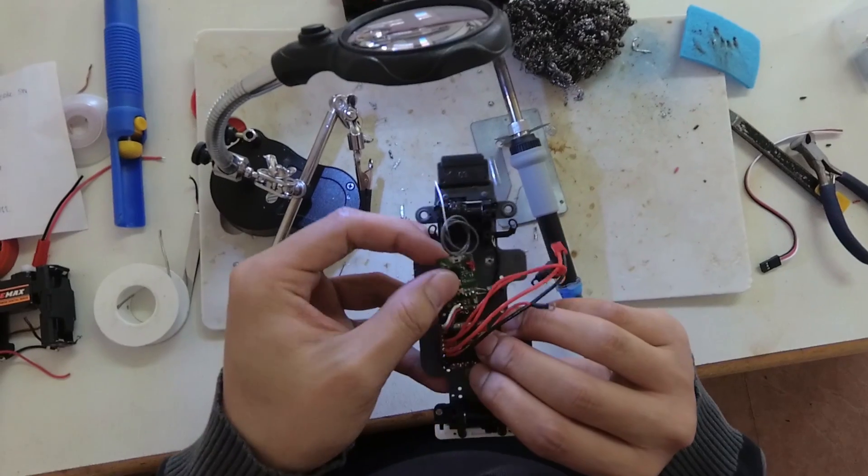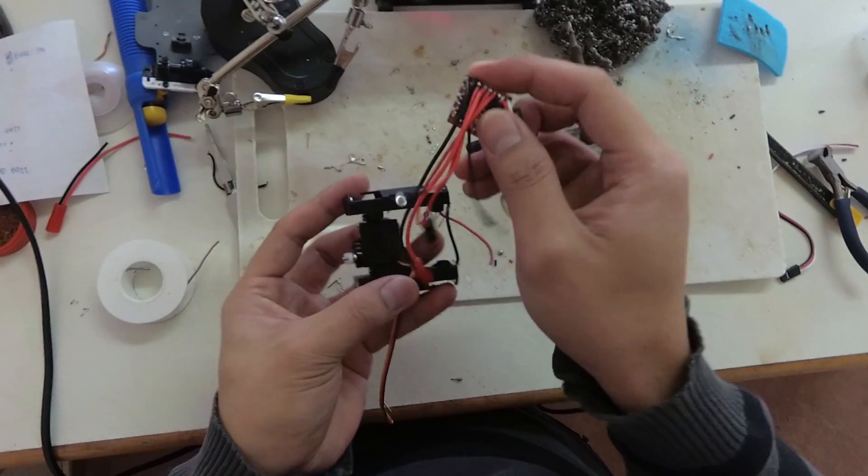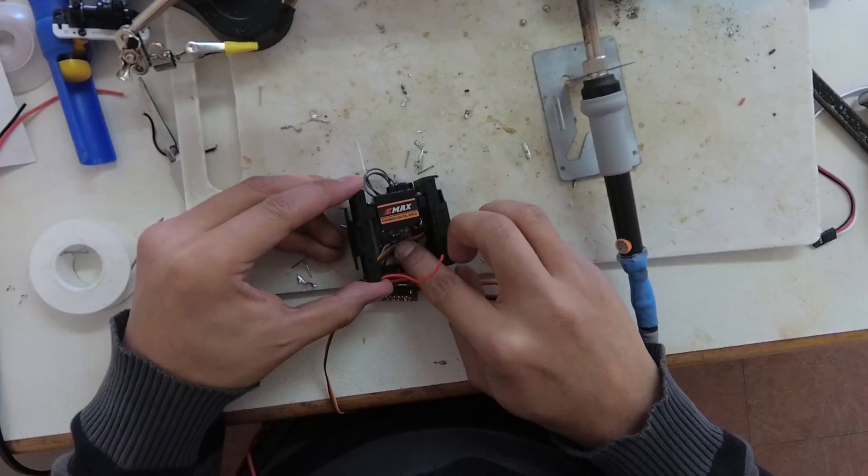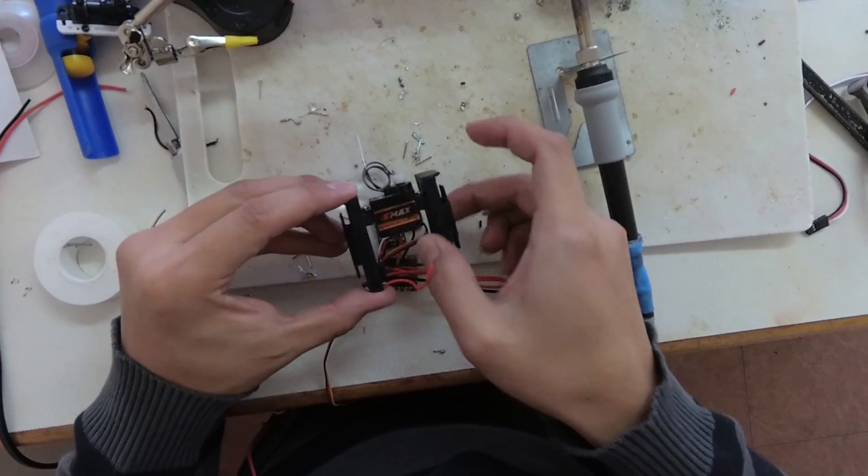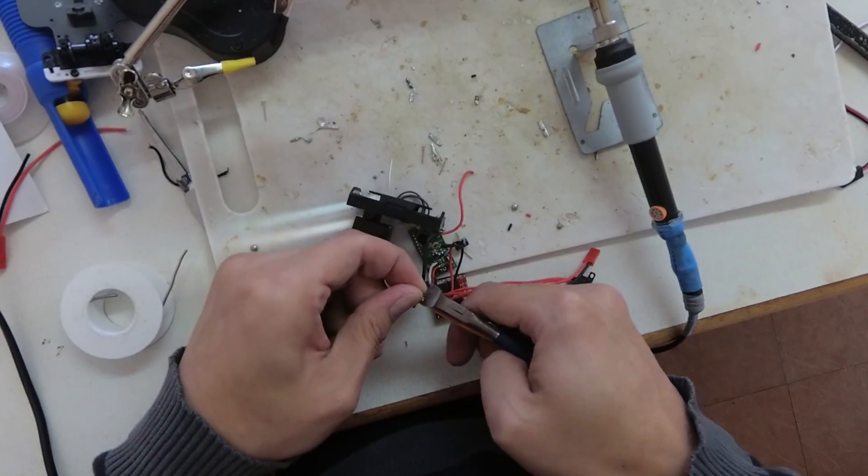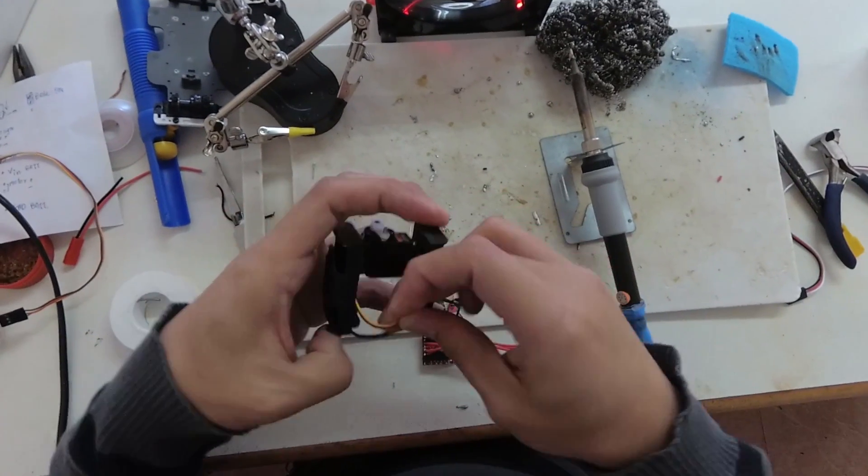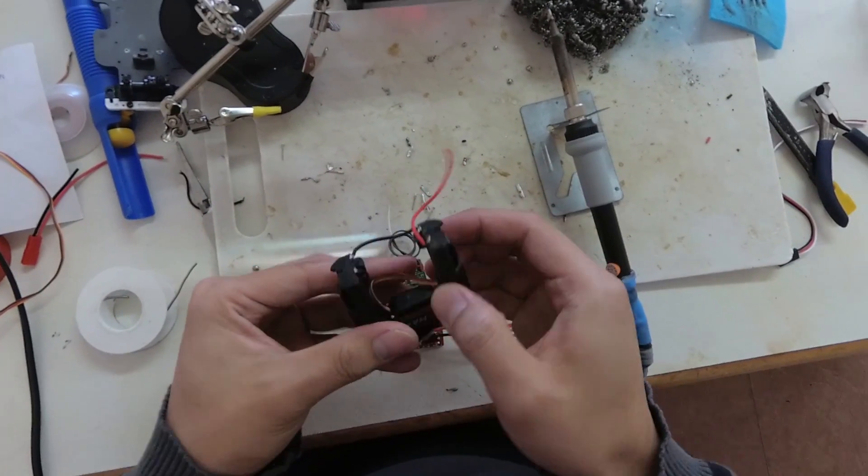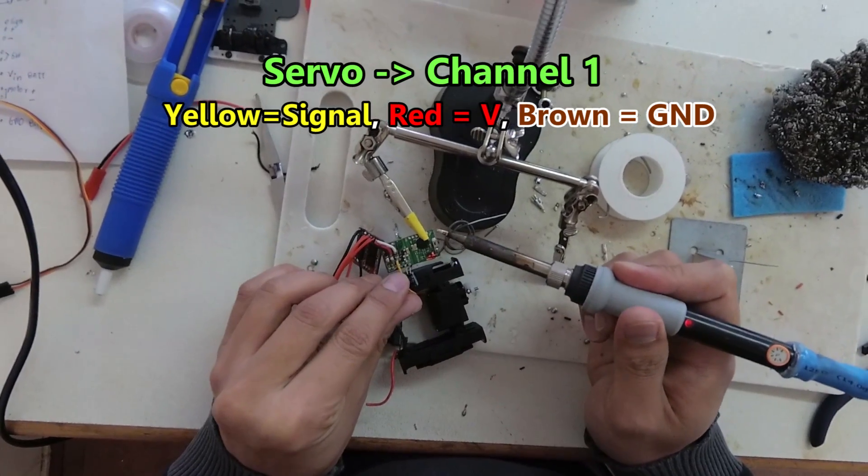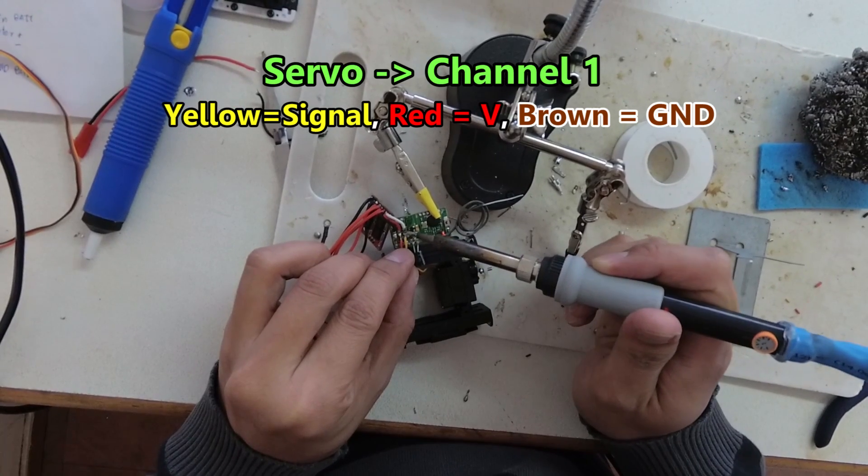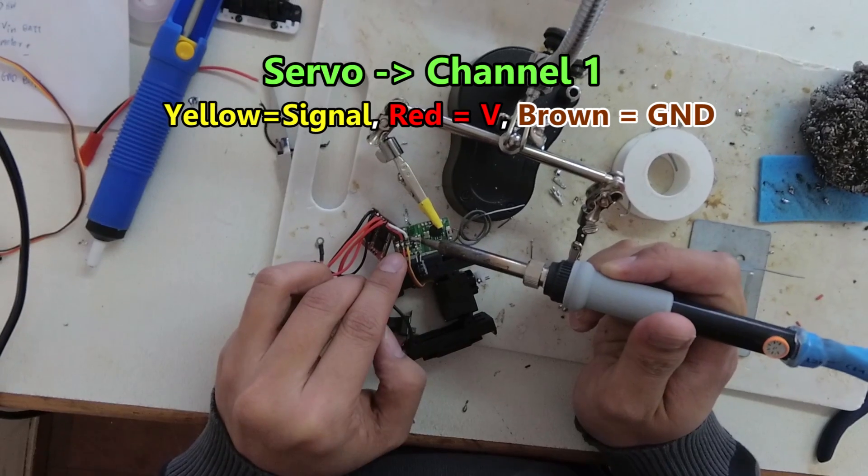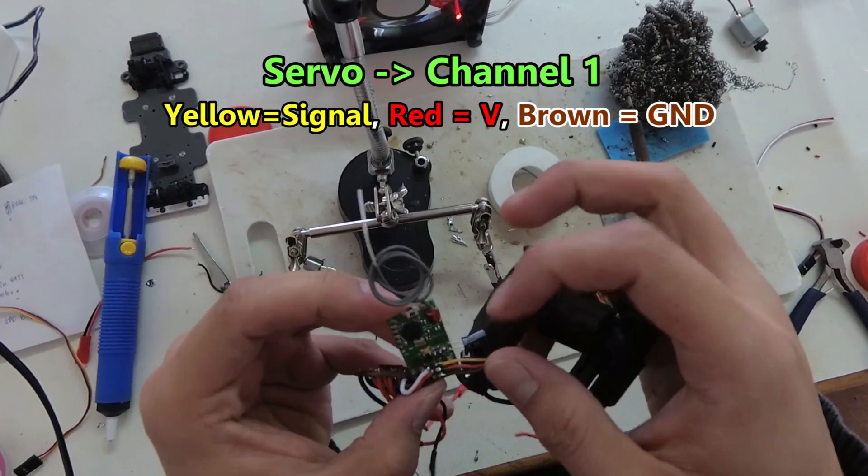Now that we know the size of the whole board, let's do the servo. Again, measure and cut the wires to be just enough. For this servo, yellow is signal, red is positive, and brown is ground. Solder them to the channel 1 on the receiver.